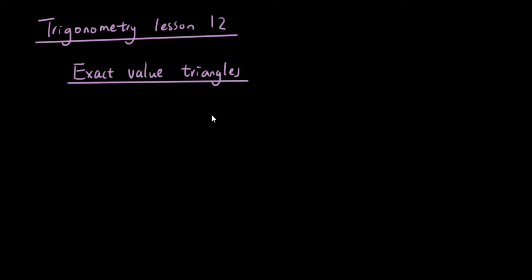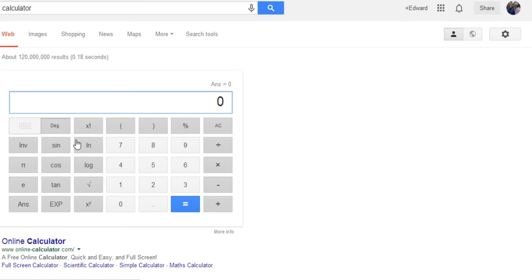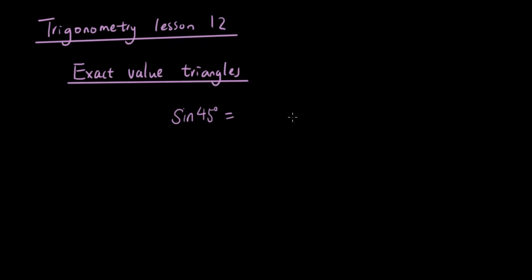What we're going to talk about today are exact value triangles. Let's slowly start leading you into it from the basics. So if you type something like sine 45 degrees in your calculator, you get a very long number: 0.7071067... and so on. This number actually keeps going forever.